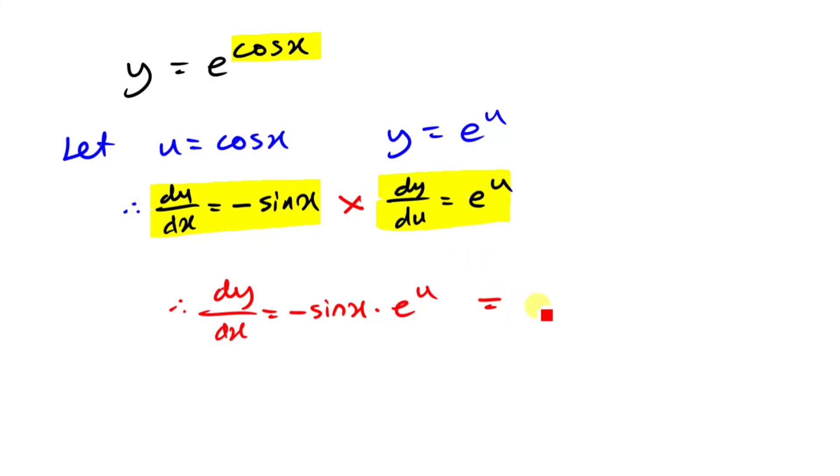So our final result is going to be minus sine x times e to the cos x. And that's it, guys.